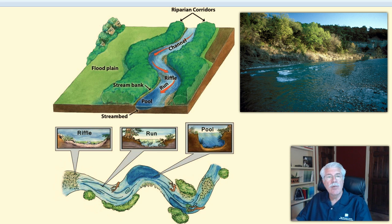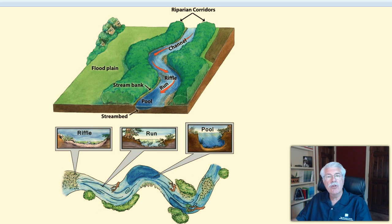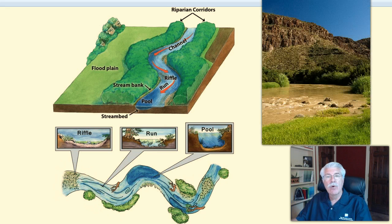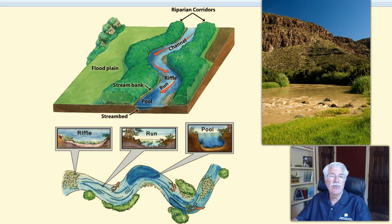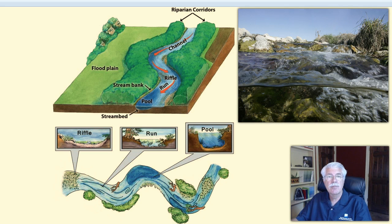The fast moving water between riffle areas and pools is called a run. Rapids may form where the water flows downhill very fast and pushes up against underwater obstacles. Rapids are where you see very turbulent water flow — there are very often rocks, sometimes very large rocks or logs.